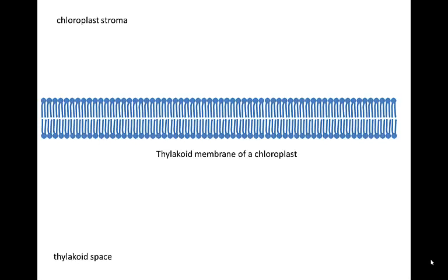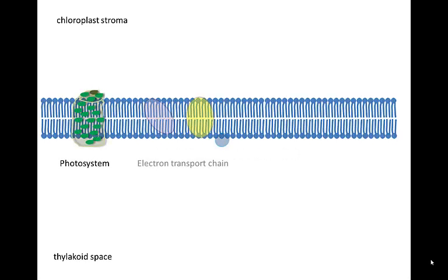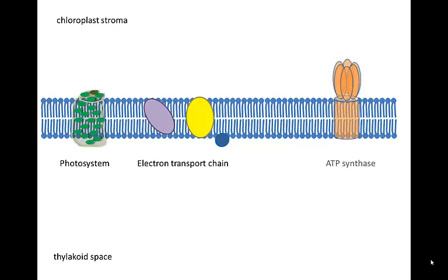Non-cyclic photophosphorylation in plants takes place in the thylakoid membrane of organelles called chloroplasts. Like bacteria, plants have a photosystem, an electron transport chain, and ATP synthase.